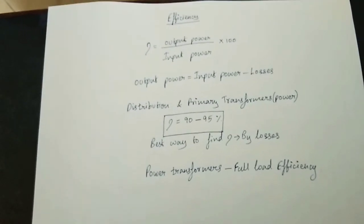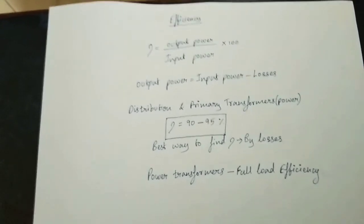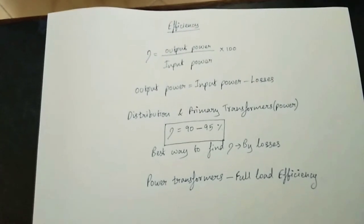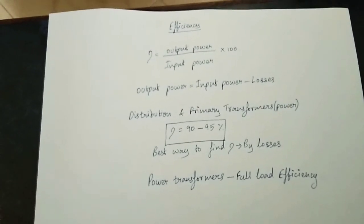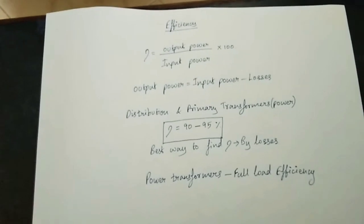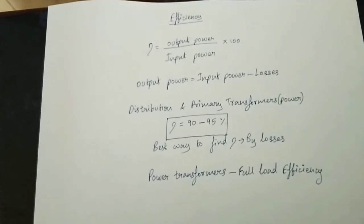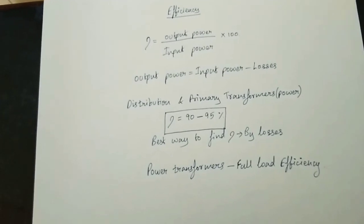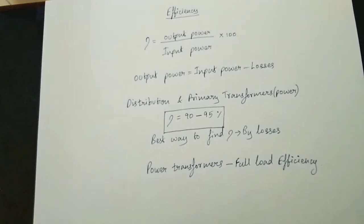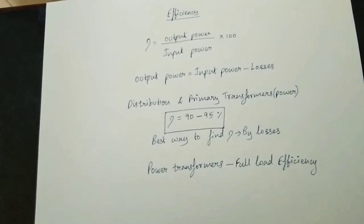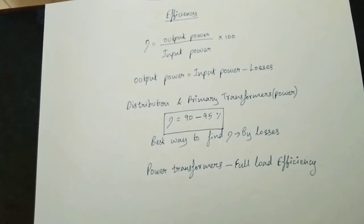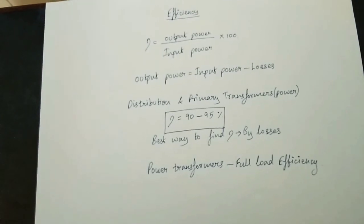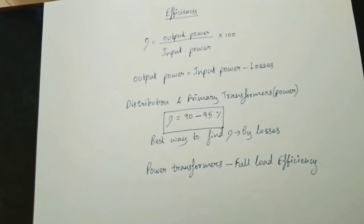If you have a machine, you can use the input power and the output power. Efficiency is the ratio of output power to input power, multiplied by 100. You measure the output power and that gives you the efficiency.